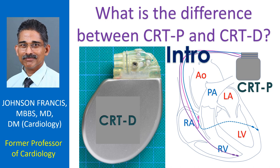CRT is a type of pacemaker in which electrical leads are placed in three chambers of the heart: the right upper chamber (right atrium), the right lower chamber (right ventricle), and the left ventricle.